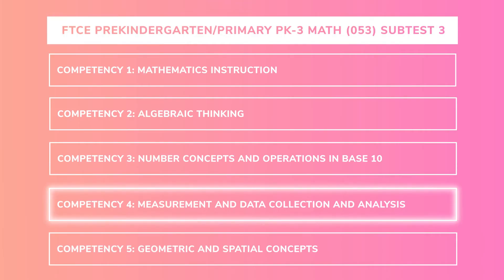Competency four focuses on measurement and data. It takes up about 15% of your exam, so expect about seven questions. When we say measurement, we're talking about way more than just using a ruler. You need to know how to measure and teach children to measure length, time, and money, just to name a few. Then you'll need to calculate values using those measurements — counting how much change you should be given, how much time has passed, or even area, perimeter, and volume of basic shapes.